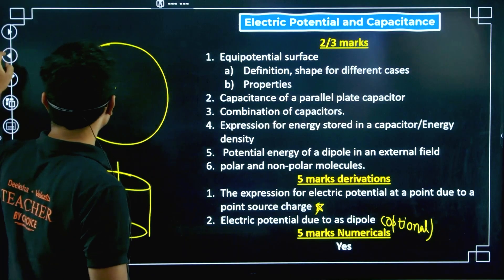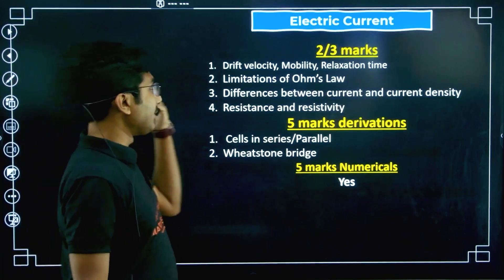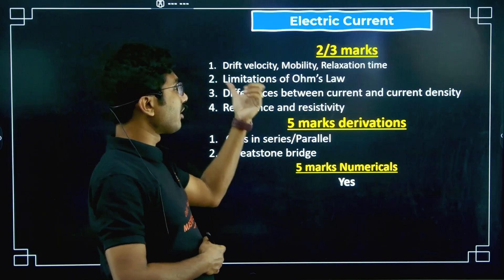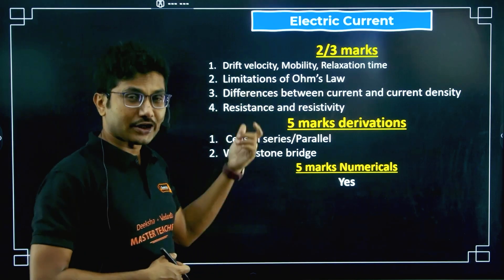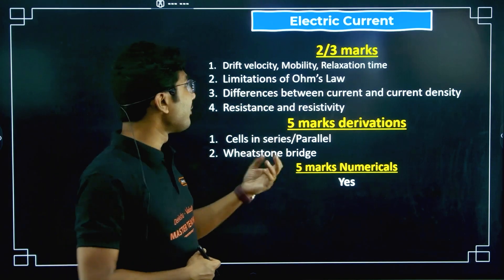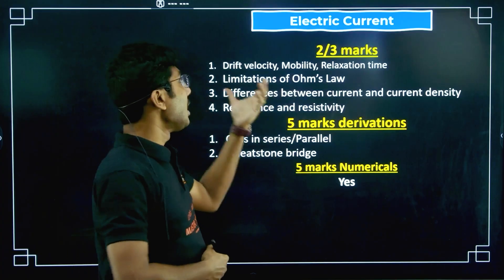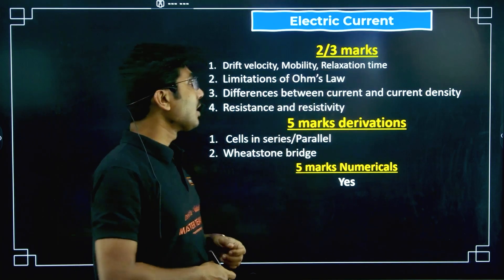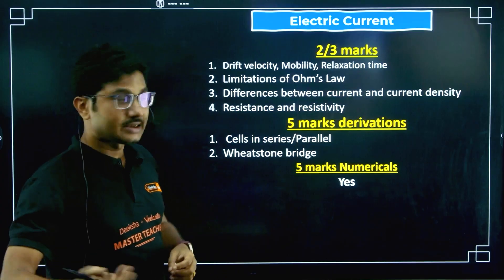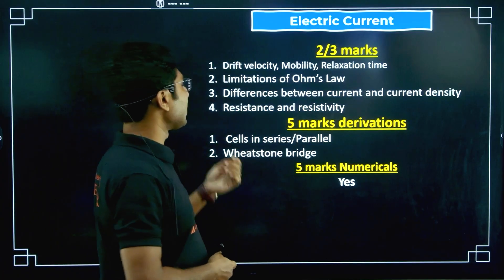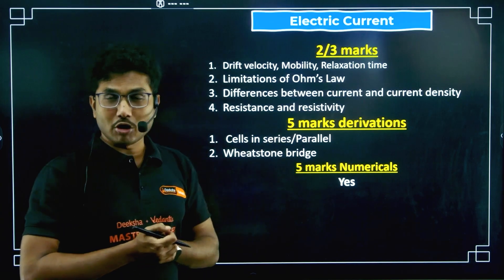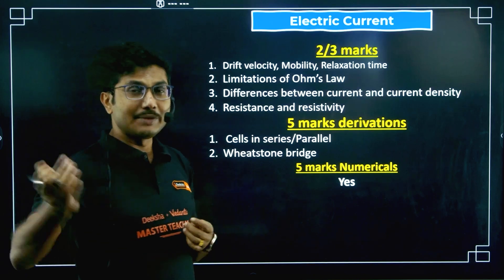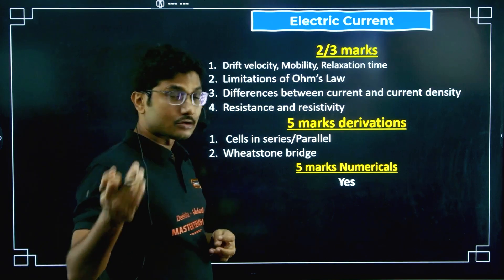Next is Electric Current — a very high-weighted chapter. From here: drift velocity, the expression and derivation of current in terms of drift velocity are very very common. Mobility — expression of mobility and its unit. Relaxation time and its unit, which is seconds — these are also very important concepts. Limitations of Ohm's law — write two or three limitations — these are also common questions.